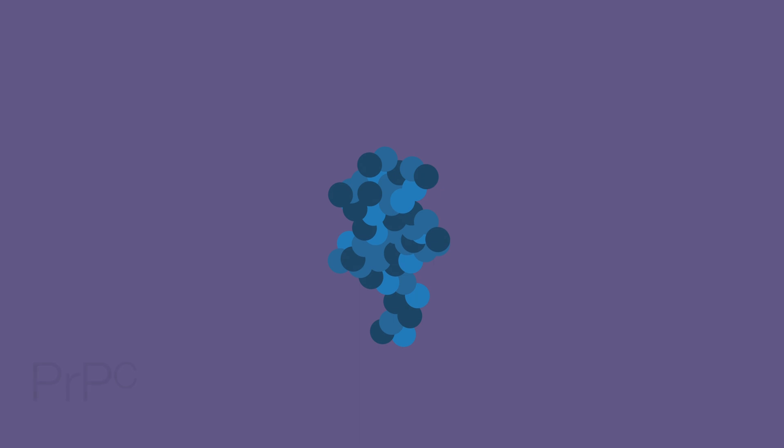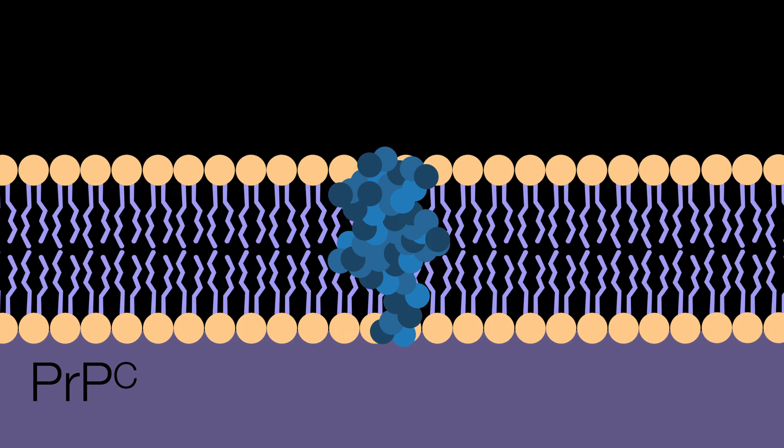In its natural form, it's written as PRPC, and its functions are not exactly clear. Although it's known that it resides in the cellular membrane, and it might be involved with copper ion transport.